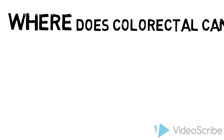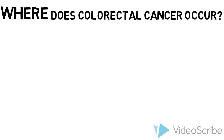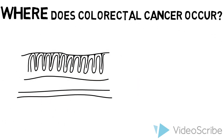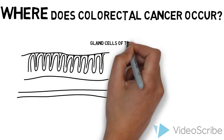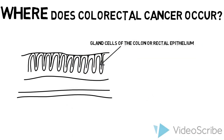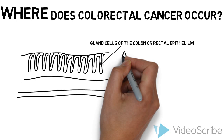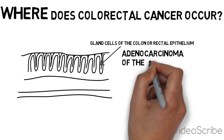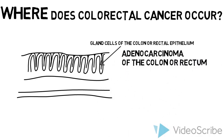Where does colorectal cancer occur? Colorectal cancer most often starts in gland cells that line the wall of the colon or the rectum. This kind of cancer is called adenocarcinoma of the colon or rectum. Rarer types of colorectal cancer can also develop, including small cell carcinoma and squamous cell carcinomas.